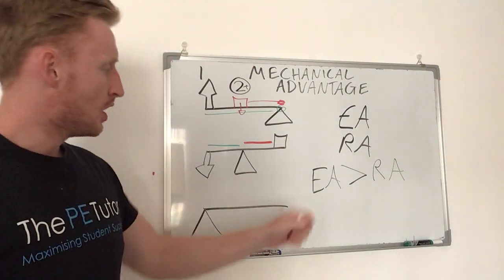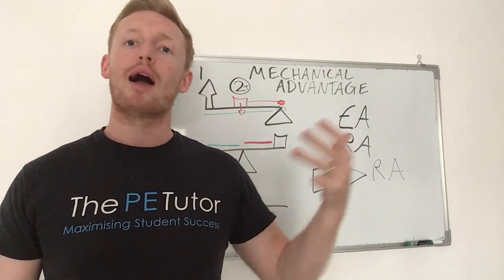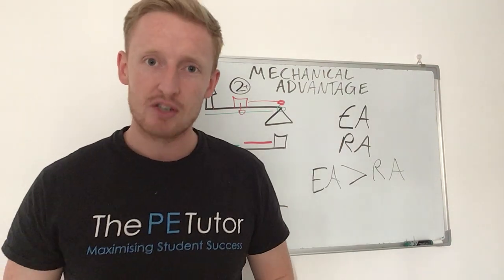So a mechanical advantage, when the effort arm is greater than the resistance arm, less input gets more output. And that is your knowledge in 90.